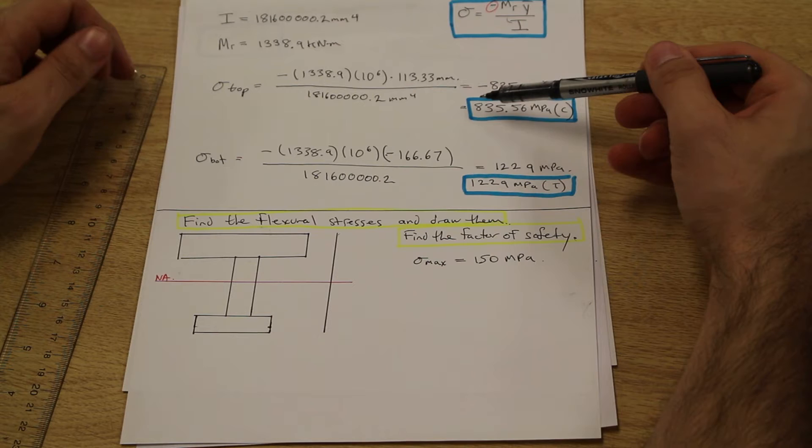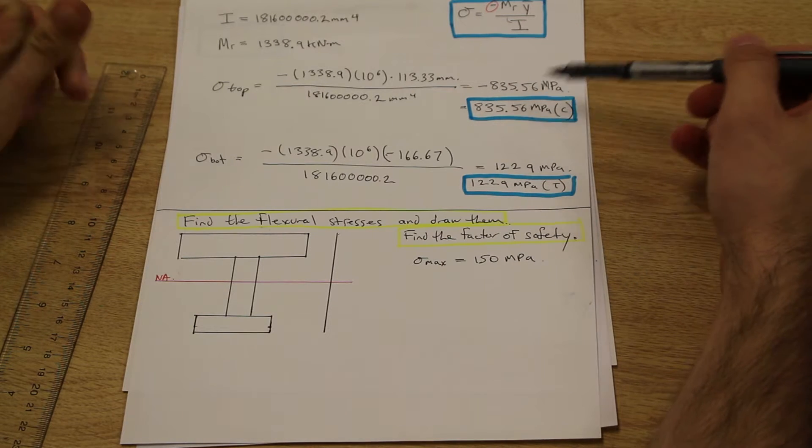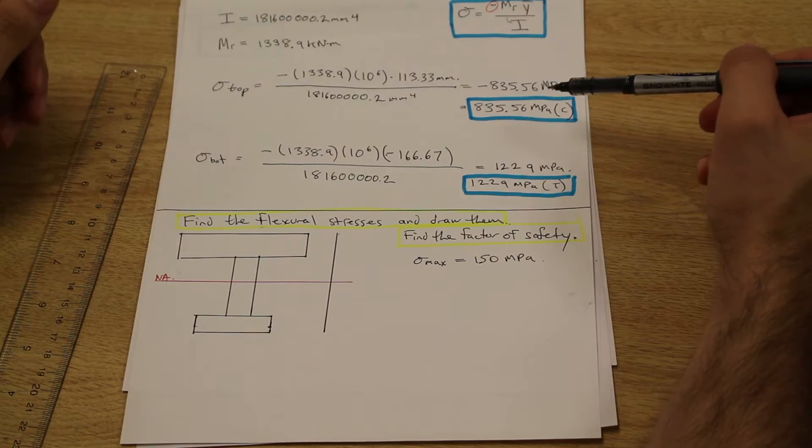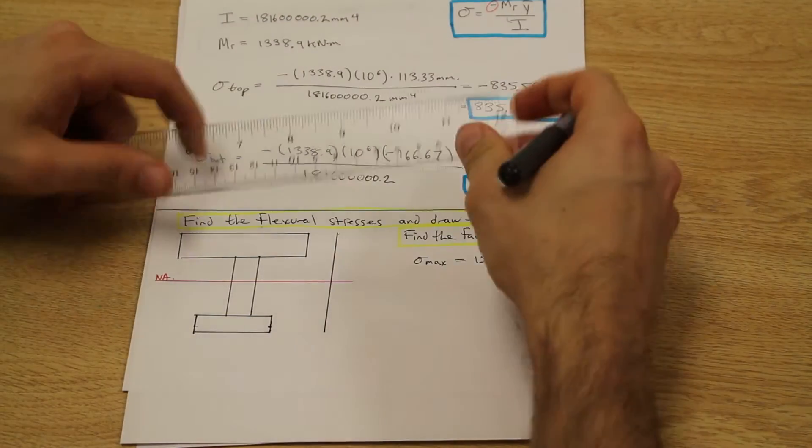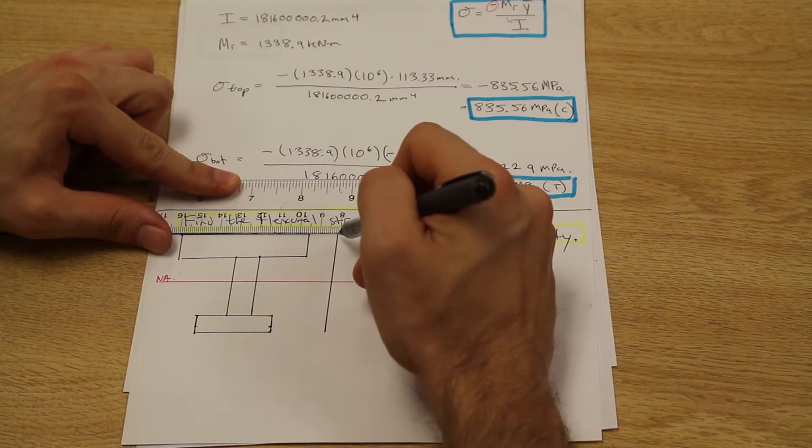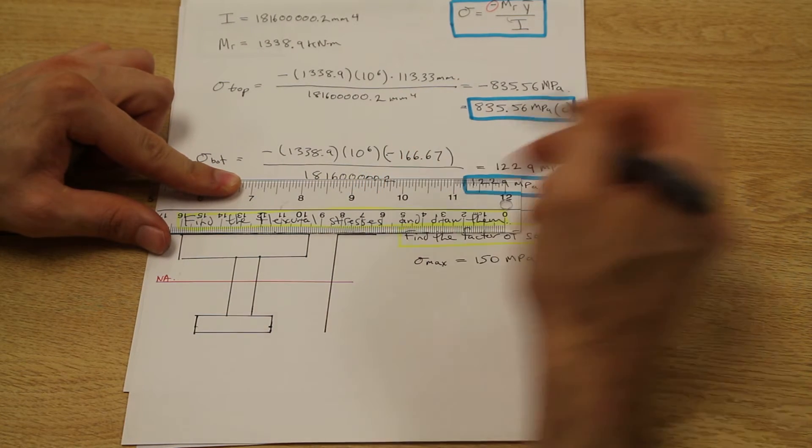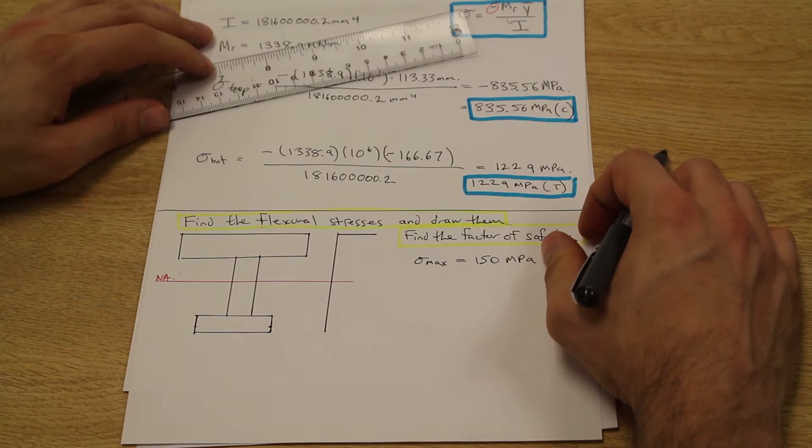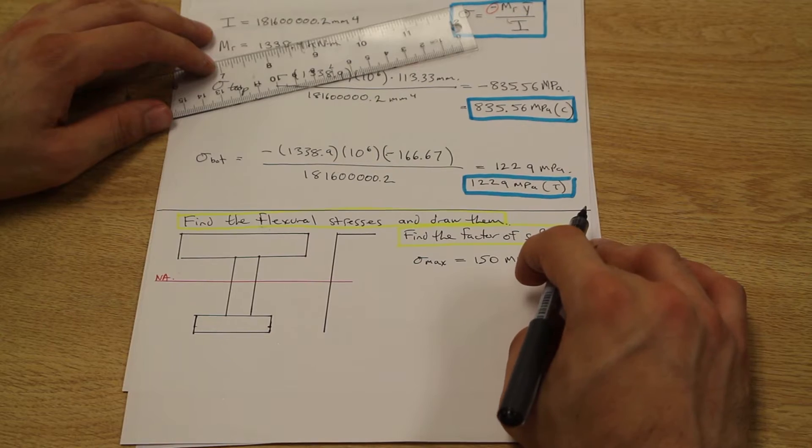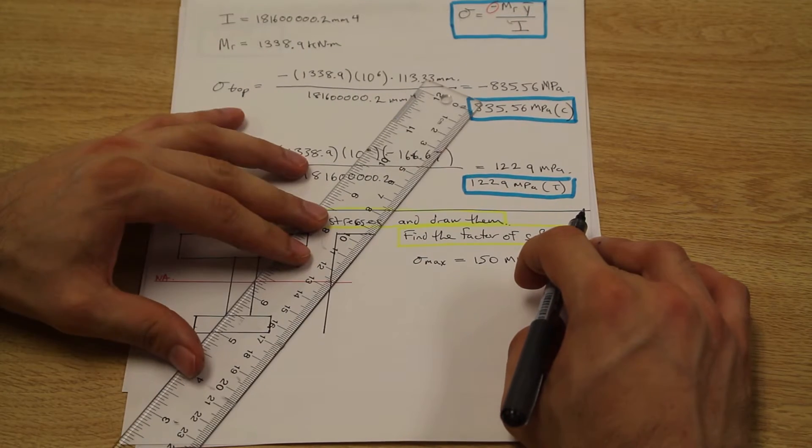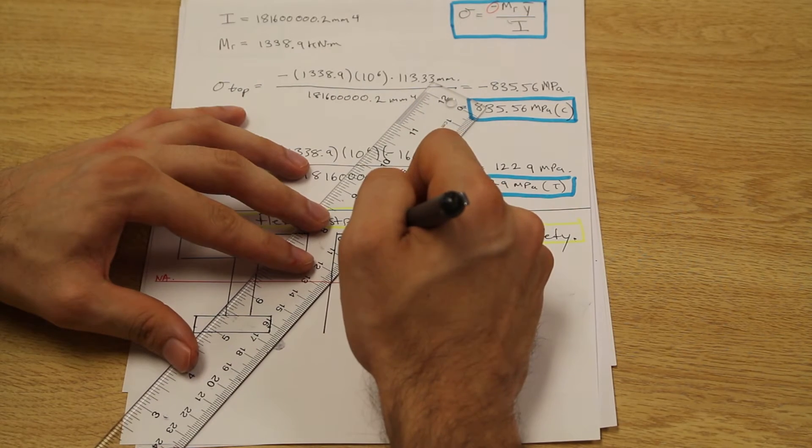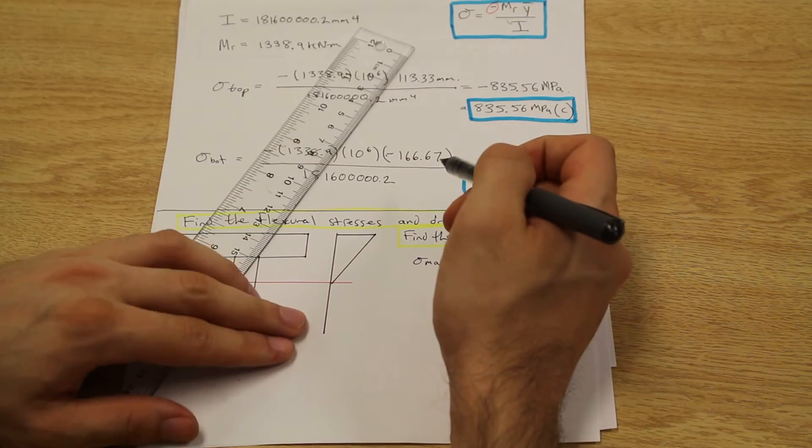So our sigma top that we solved for initially was 835.6 megapascals and in compression. And that's at the top of the beam, if you remember our definition of flexural stresses. So what we're going to do is we're going to go to the top of the beam and we're going to draw a line. And that line is extending out of the line that we drew. And what that's going to do is it's going to form a triangle. It's going to form a linear distribution of that stress. So that's what that's going to look like.